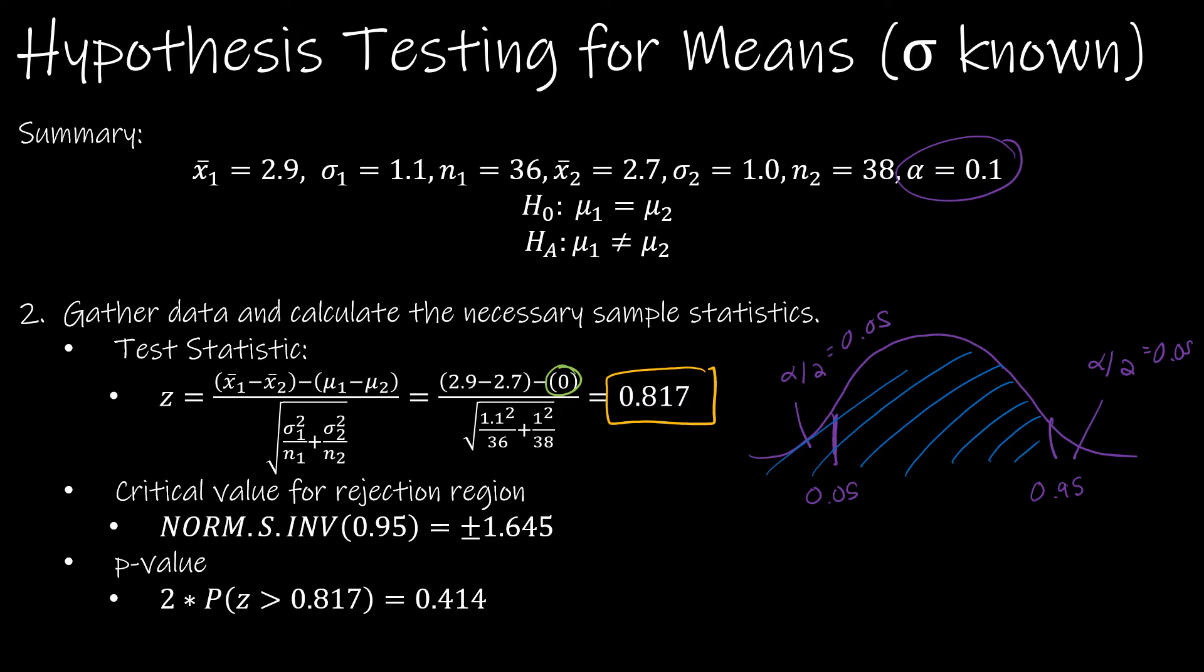And for the p-value, this is the one that gets a little tricky, because what I have to do is find a p-value for this area to the left, and for this value to the right. And remember that both of those values are the same, and that's where that two times comes in.